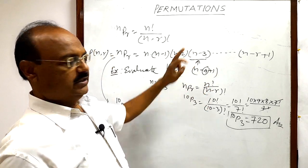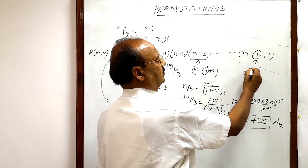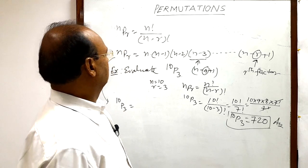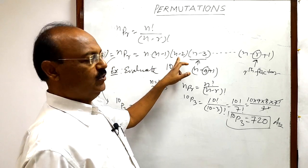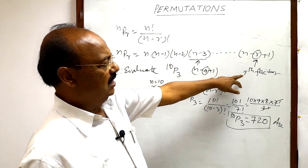This is the fourth factor. You see this number 4 here. Similarly, if R is here, then this is the Rth factor. So N into N minus 1 into N minus 2, we are writing in descending order up to how many factors? R factors.